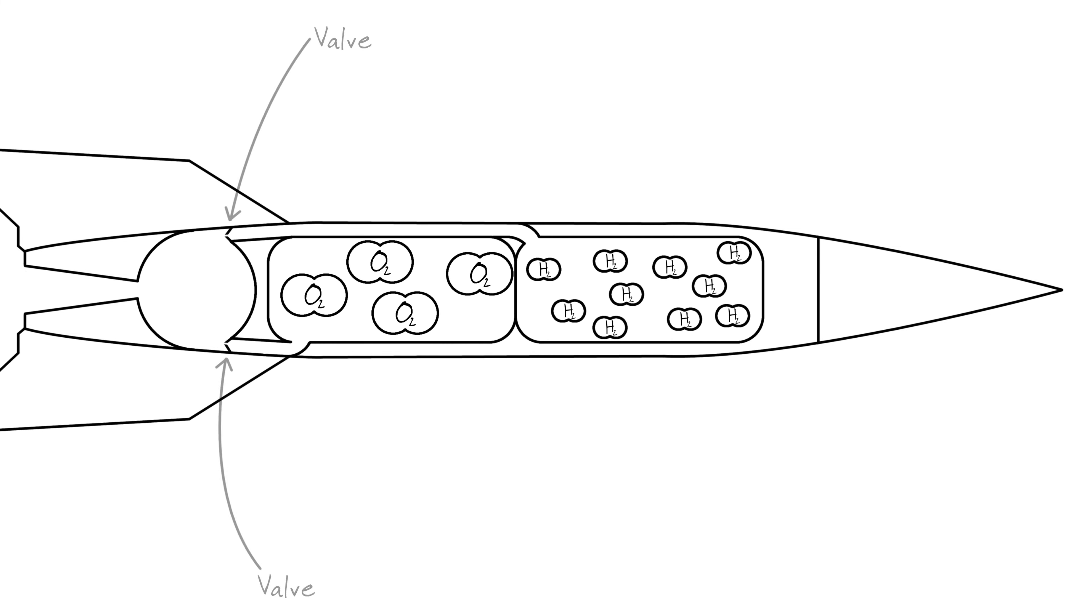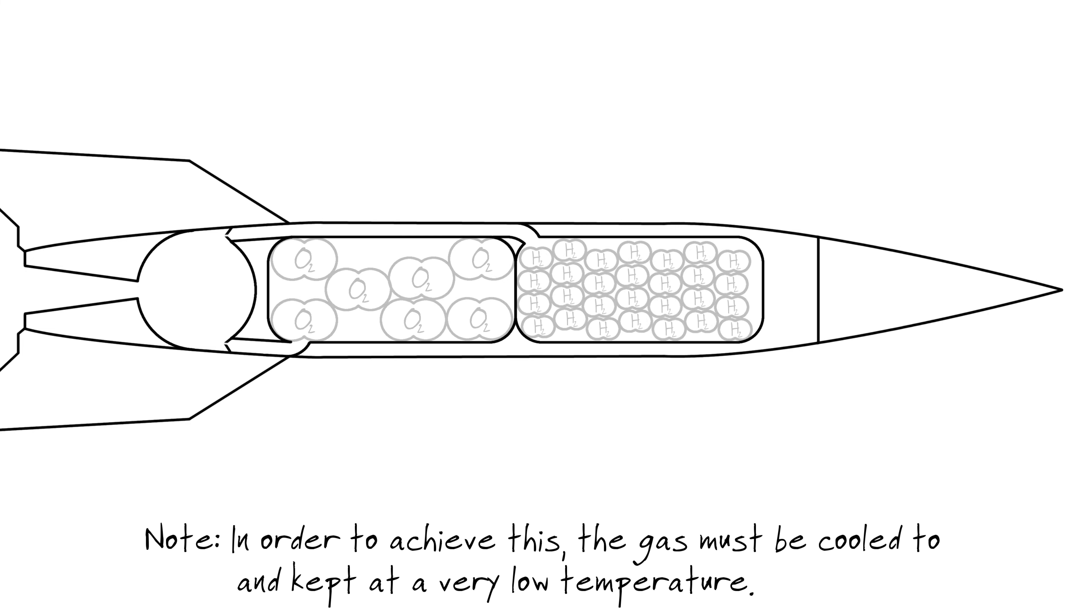Now our rocket is looking pretty good. However, you might notice two subtle problems with our setup. First, because gas molecules bounce around, there is going to be a lot of wasted empty space between molecules in these tanks. Fortunately, as we add more and more molecules and the pressure in the tanks rises, the gas will eventually condense into a liquid. This means that we will be able to store a lot of each chemical in a relatively small tank, which is great news.